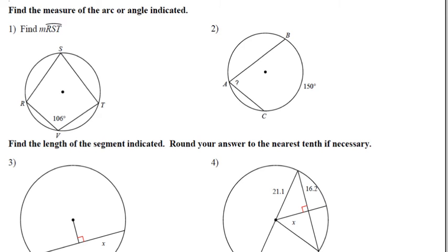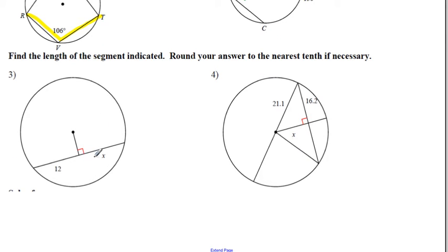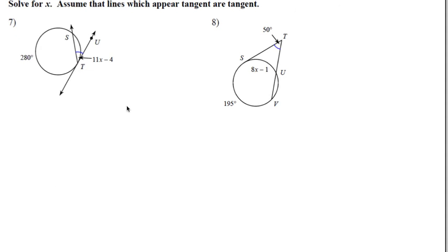Now for basic skill problems. First: the measure of an inscribed angle equals half the intercepted arc, or the arc is twice the angle. If the arc is twice the angle, and the arc is 106°, the measure of arc RST is 212°. Labeling the next one, half gives us 75° — easy enough. Another has two equal pieces because they bisect, giving 12. And one uses a² + b² = c².